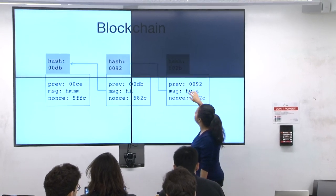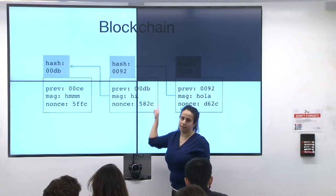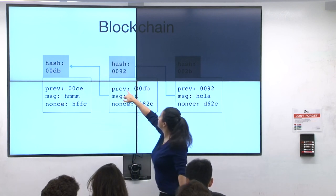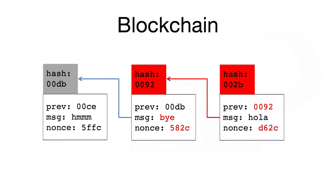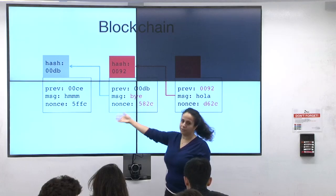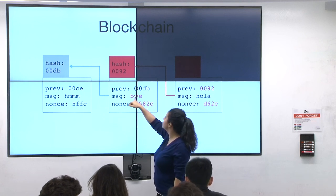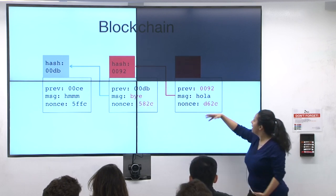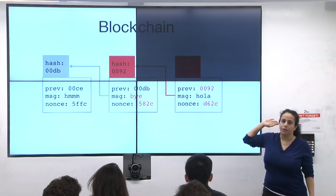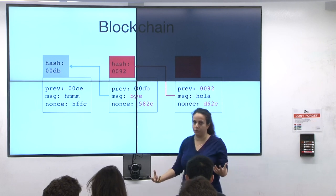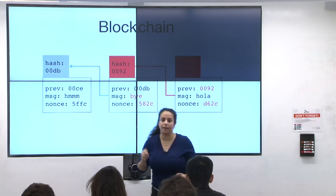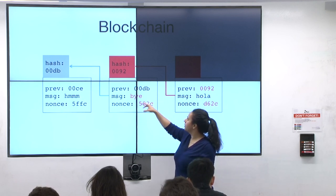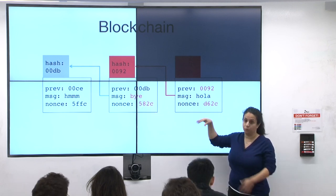Note that there isn't actually a physical pointer or memory address connecting these two blocks, and this block does not actually contain the hash of itself. We're implicitly pointing to it by including the hash of this block in the following block. If you change anything about previous blocks — for example, if you change this message — you'll need to change the nonce to get the hash to compute right. That change trickles down through the entire blockchain, which is what makes these things tamper-proof, because these hashes are collision resistant.